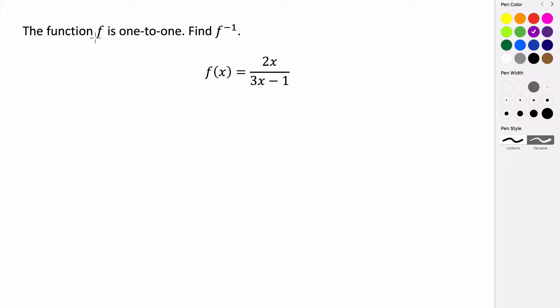We're given the function f is one-to-one and we want to find its inverse. When we're trying to find the inverse, remember we make f of x be y, and then we replace y with x and we replace the x's with y, and then we solve for y.